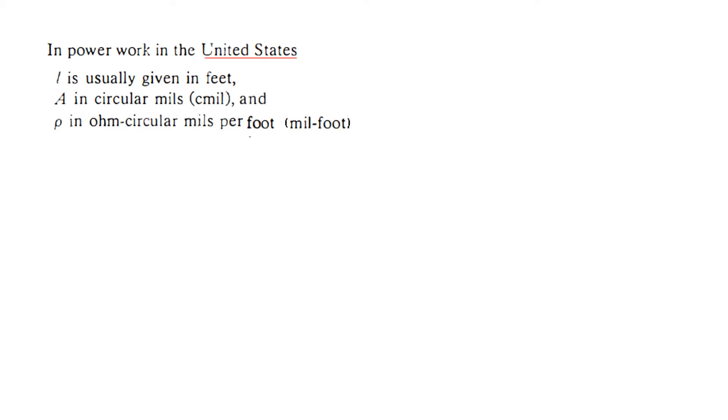Another confusion is that in the United States they use the dimensions foot and pound, and we use the meter units. In power work in the United States, length is usually given in feet, area in circular mils (cmil), and ρ in ohms per circular mil. Since most books are still written in the United States, it is important that we learn this one.